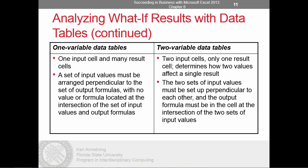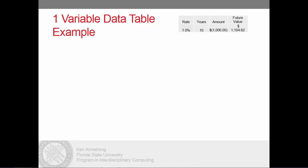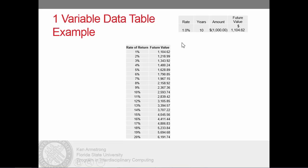A one-variable data table has only one variable input cell and many result cells. It's great for showing how changes in one variable affect the output of a formula. For instance, how much would we earn on an investment if we invested at different interest rates varying between 1 and 20%? We could run our future value formula 20 different times for each percentage and record the values, but life is too short for that — that's why we use a data table.